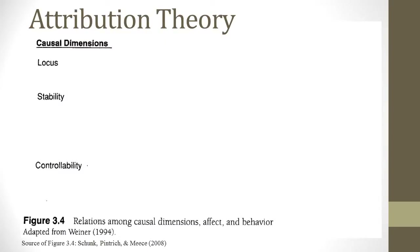Those familiar with attribution theory may remember the three dimensions of causal attributions that play a role in students' emotions: locus, stability, and controllability. Locus is the location of the cause — it can either be internal, within the person, or external, within the environment. Stability refers to the duration of the cause — it can be a stable, fixed trait, or something unstable and variable that can change. Control refers to the controllability of the cause — either controllable, where the person is responsible, or uncontrollable to the person.